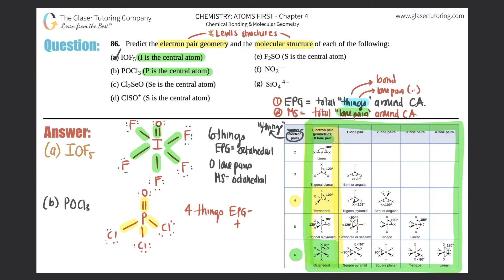Four things gives a tetrahedral electron pair geometry. Looking at lone pairs, phosphorus has no lone pairs — zero lone pairs. So with four things and zero lone pairs, the molecular structure is also tetrahedral. Both the electron pair geometry and molecular structure are the same for part b.